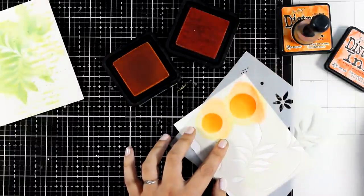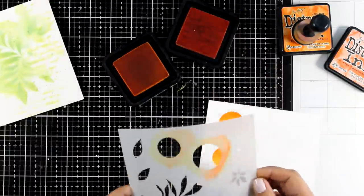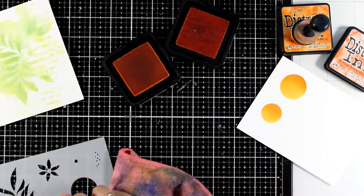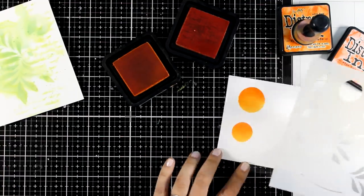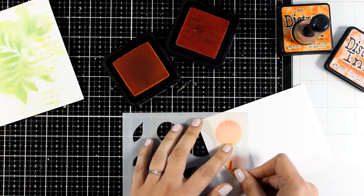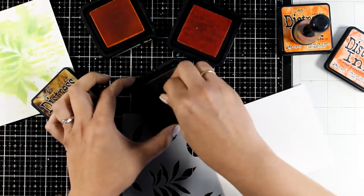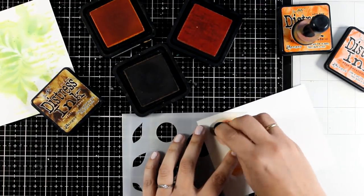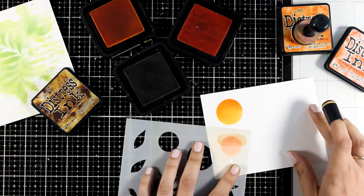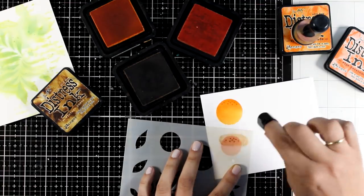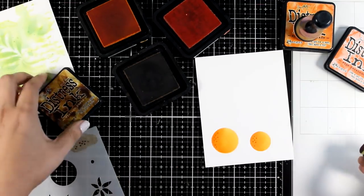The colors I used for my oranges are Spiced Marmalade and Ripe Persimmon. Now you will find in the stencil a bunch of little dots. These are to create some details on top of your oranges. Add them on the darker side of the orange, and just adding a little bit of Vintage Photo to finish them off. Now I'm going to die cut those circles.